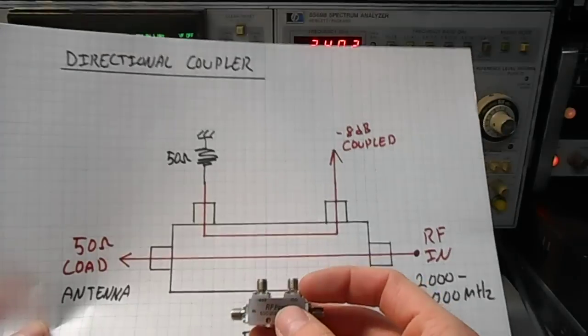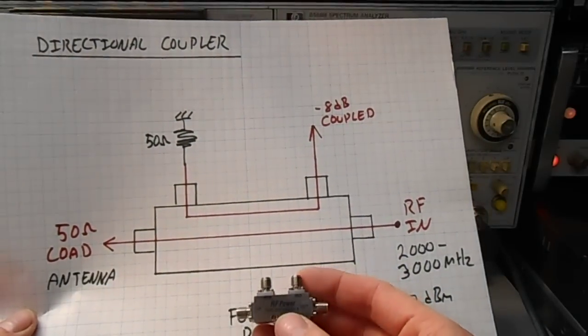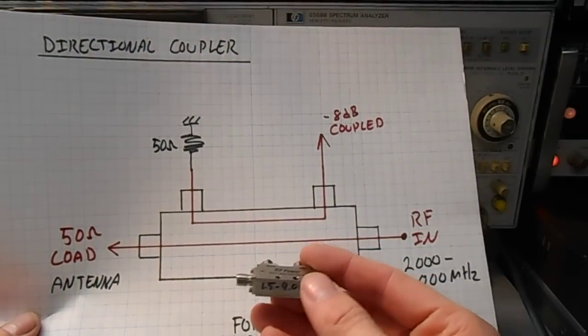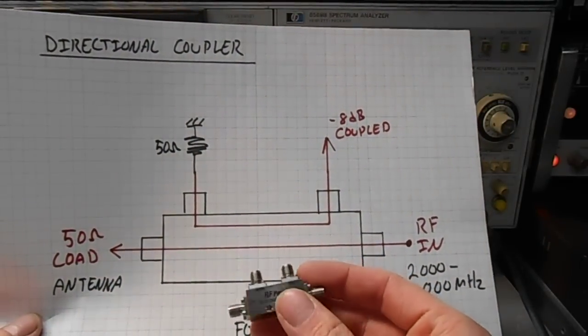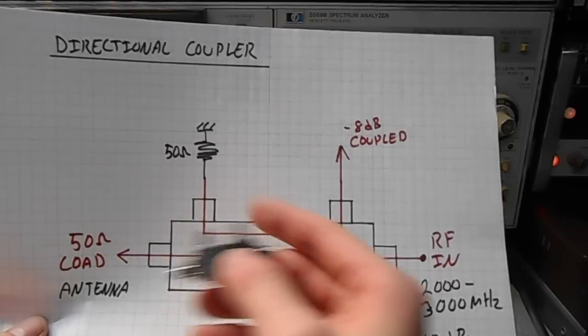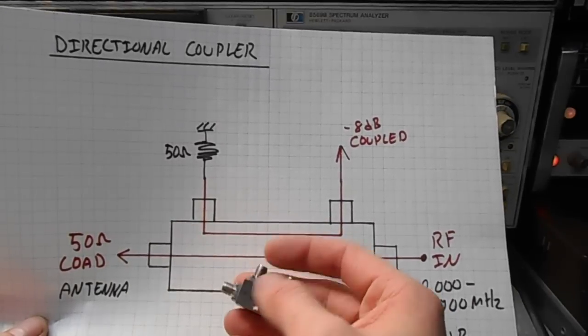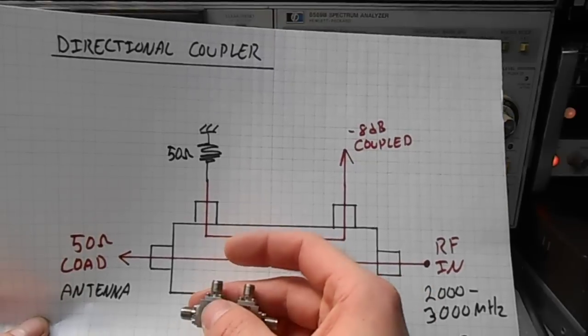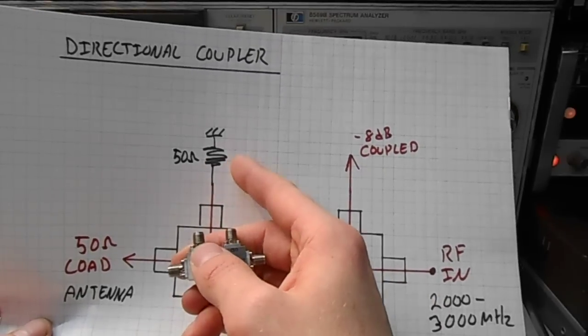The actual coupling factor isn't really going to matter, but the frequency range of the directional coupler will be important. And there's usually two coupled ports like this. One of the ports has to have a 50 ohm termination.